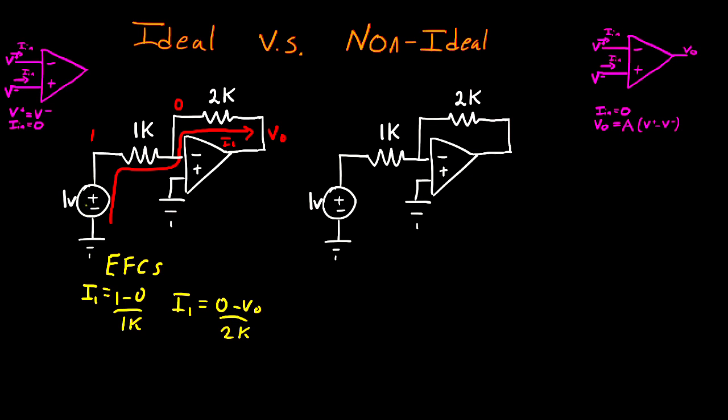Now we wrote the equation for our voltage source on the circuit by labeling this node 1 volt, so that means we're done. And we can go ahead and solve for VO. So equating these two together, we get 1 over 1K is equal to minus VO divided by 2K. And this gives us an output voltage of VO is equal to negative 2 volts. And that's the case of the ideal op amp. Now let's go ahead and do the same for our non-ideal op amp.